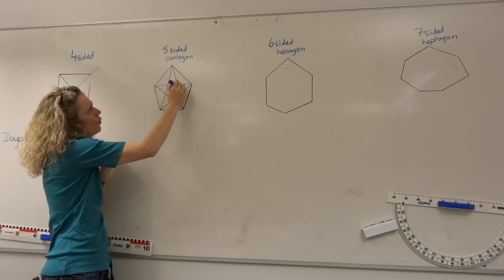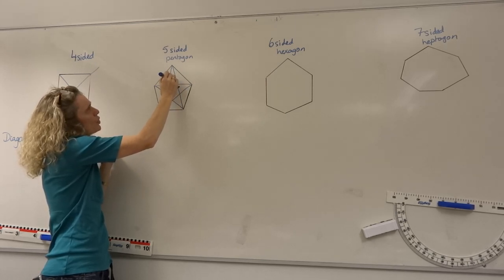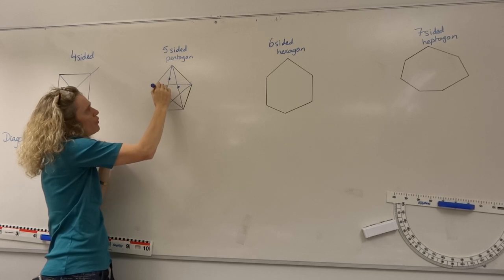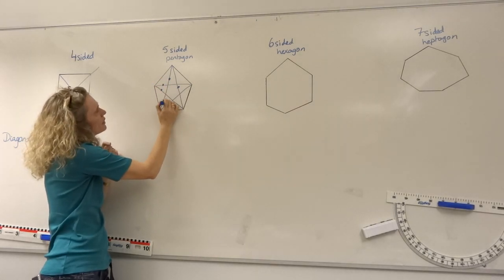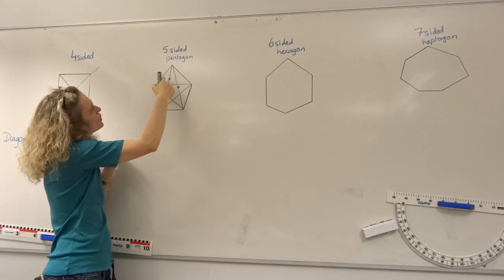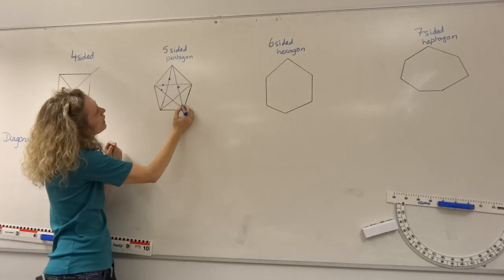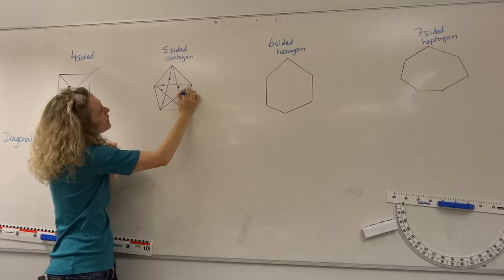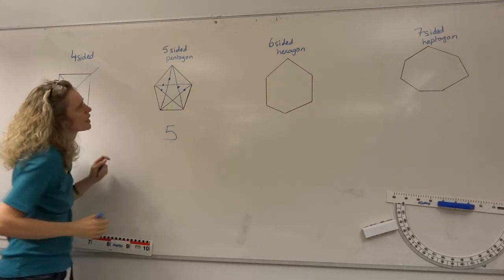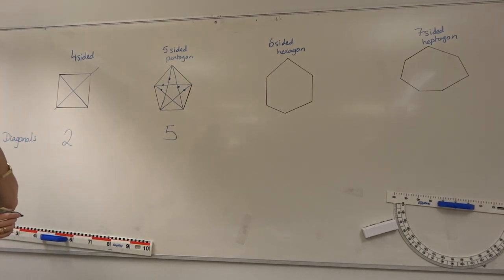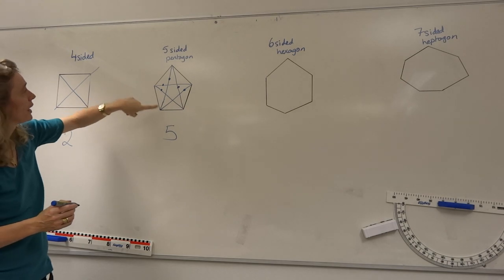We've got, well, one, two, three, four, five. No, that one we've already counted, sorry. One, two, three, four, five diagonals. So we have five diagonals coming out of a pentagon. Have we counted each one once? I think so.